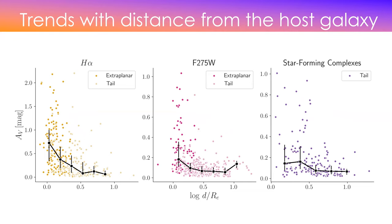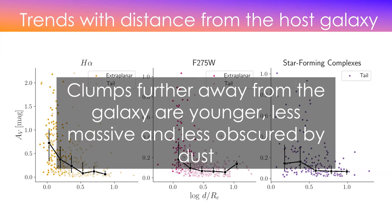When we look at dust attenuation, we see large AV values only near the galaxies. For complexes there is a triangular distribution — the trend is driven by the lack of highly attenuated objects far from the galaxy. This might mean dust is not efficiently stripped, or those regions are destroyed by interaction with the intracluster medium, as Jacopo suggested. So clumps further from the galaxy are less massive, younger, and less obscured by dust.